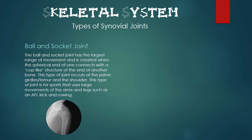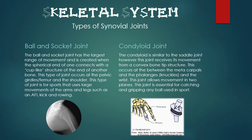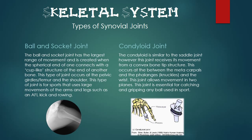Lastly is the condyloid joint. The condyloid joint is similar to the saddle joint, however the joint achieves its movement from a convex bone tip structure. This occurs between the metacarpals and the phalanges — the knuckles — and the wrists. This joint allows movement in two planes and is essential for catching and gripping any ball used in sport.